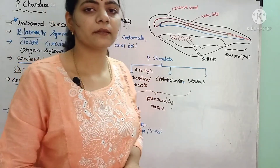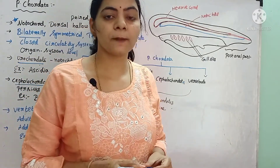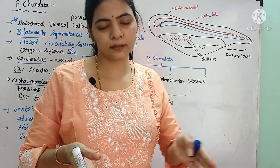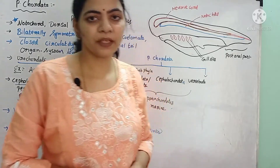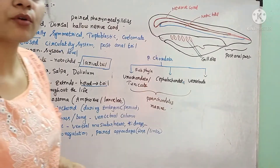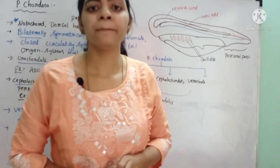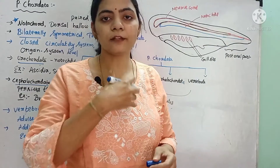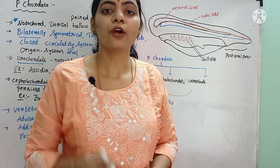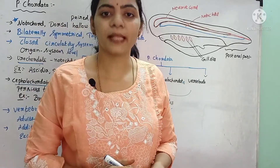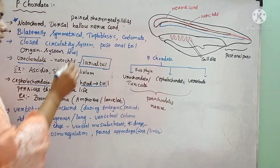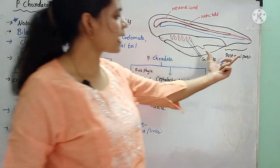And these are coelomate animals. Coelomate nature means there is a body cavity present between the body wall and gut wall — that is called coelomate nature. They also consist of a closed circulatory system. In a closed circulatory system, the blood from the heart flows throughout the body by means of closed tubes called blood vessels. They also have a post-anal tail.